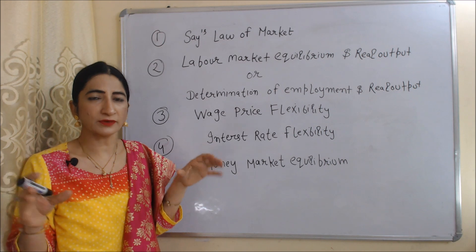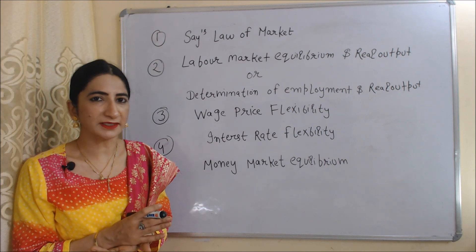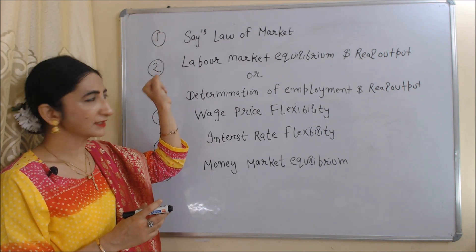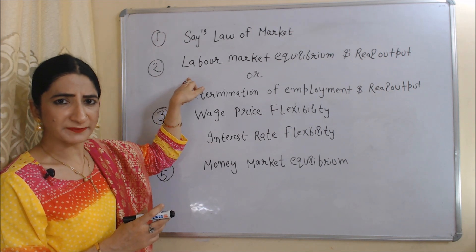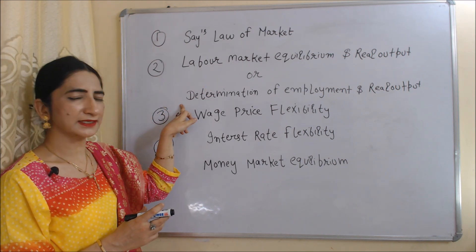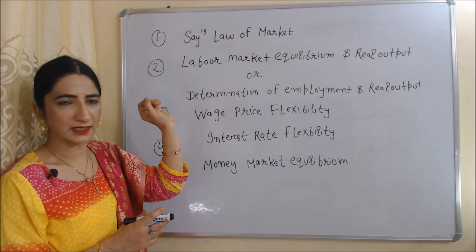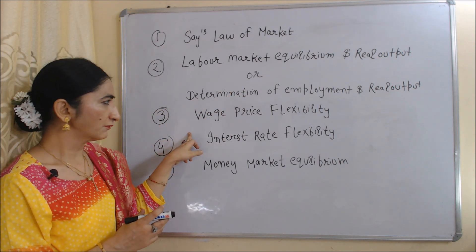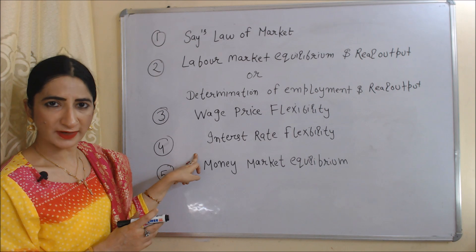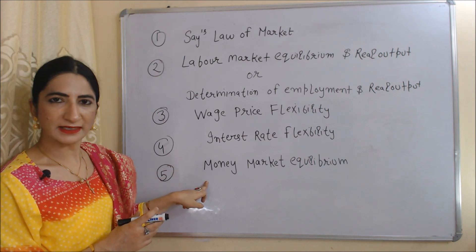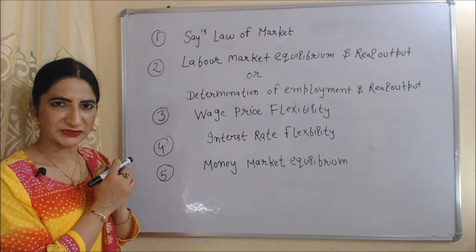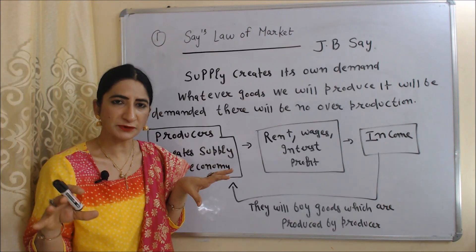The classical approach is mainly divided into five parts: Say's Law of Market, labor market equilibrium and real output — or the determination of employment and real output — wage-price flexibility, interest rate flexibility, and money market equilibrium. We will discuss each one by one.